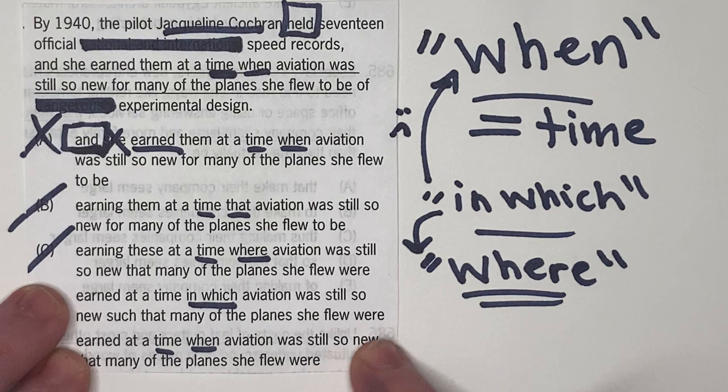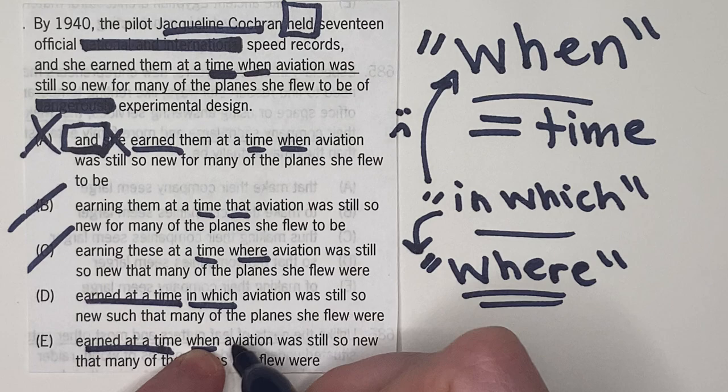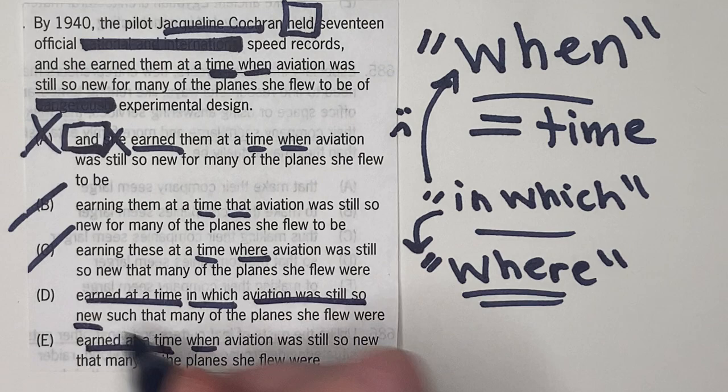So let's take a look at D and E. So there's a lot of things that are similar, earned at a time, earned at a time. Then they have in which versus when. Aviation was still so new.